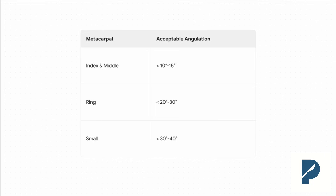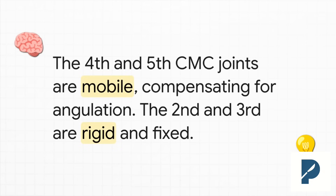But let's talk about why. It's a fantastic clinical pearl rooted in anatomy — it all comes down to the CMC joints, the carpometacarpal joints. The fourth and fifth CMC joints have a good amount of motion; they're mobile, so they can compensate for some angulation in the metacarpal neck. But the second and third CMC joints are basically rigid — fixed, no compensation. So any little bit of angulation is going to cause a functional problem, like a palpable metacarpal head in the palm.